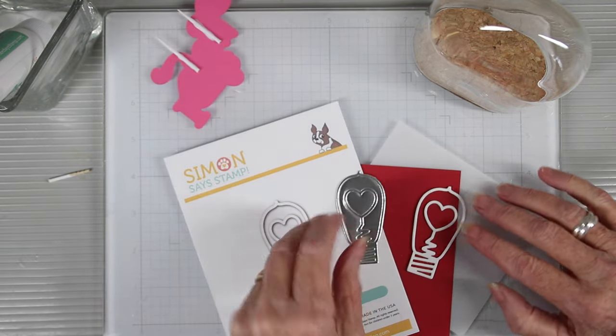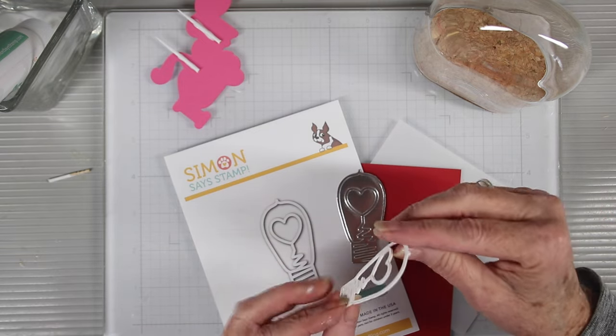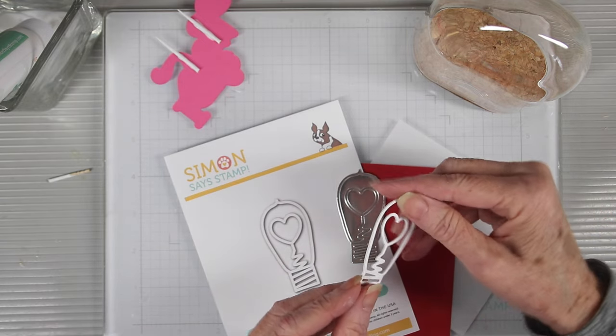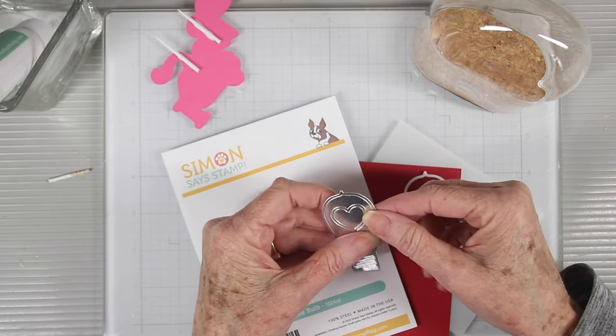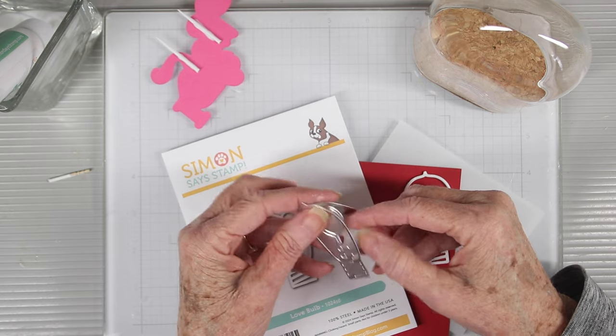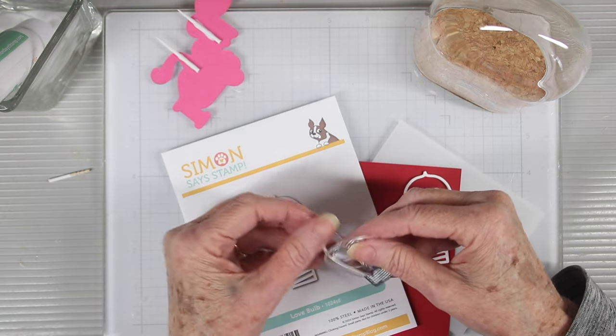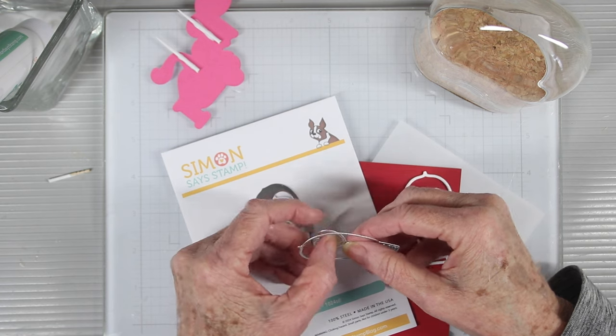Next, I've done some die cutting with the love bulb, and this is a really cute little die. I've put about four layers together for the base, and I've also cut one out using the SimonSaysStamp silver matte cardstock. This is a really beautiful silver paper, and this will be the top layer.